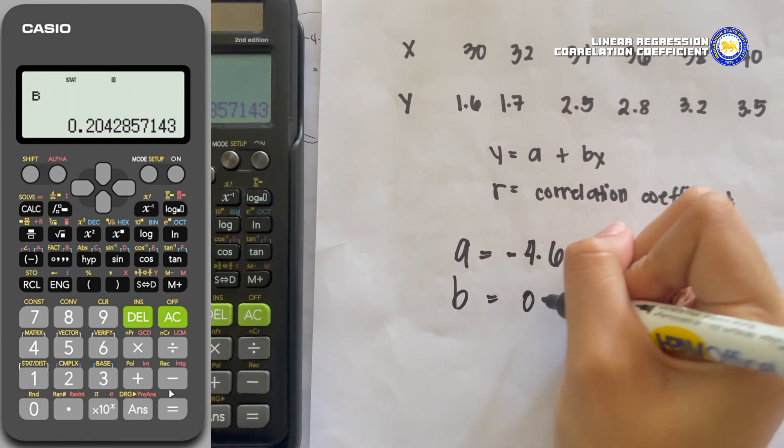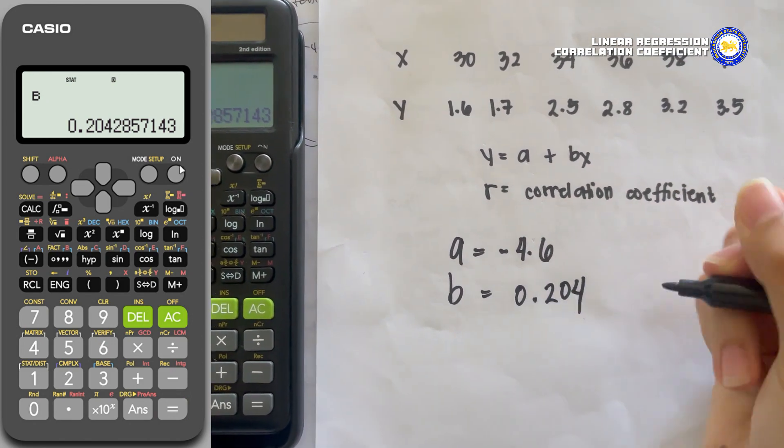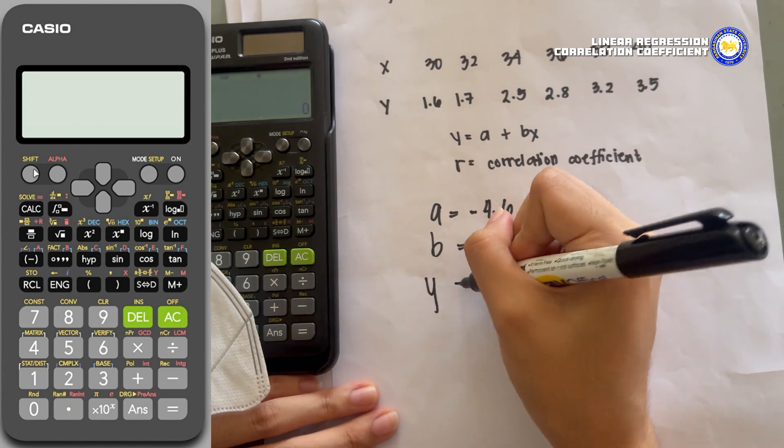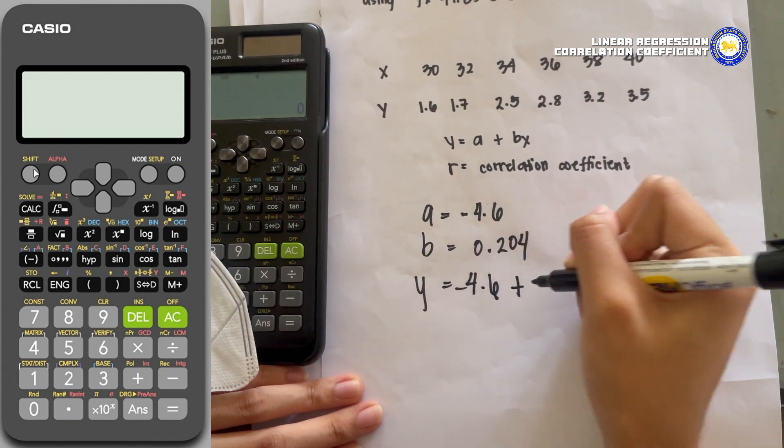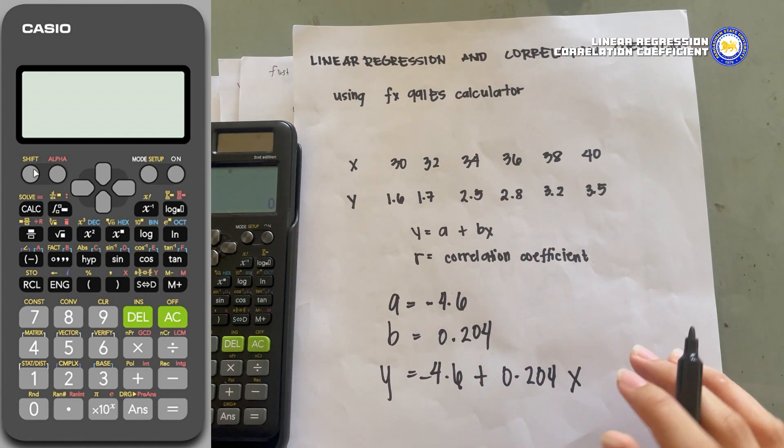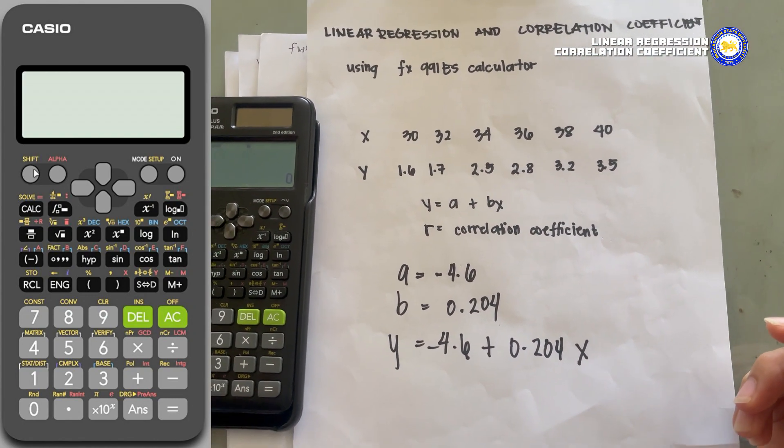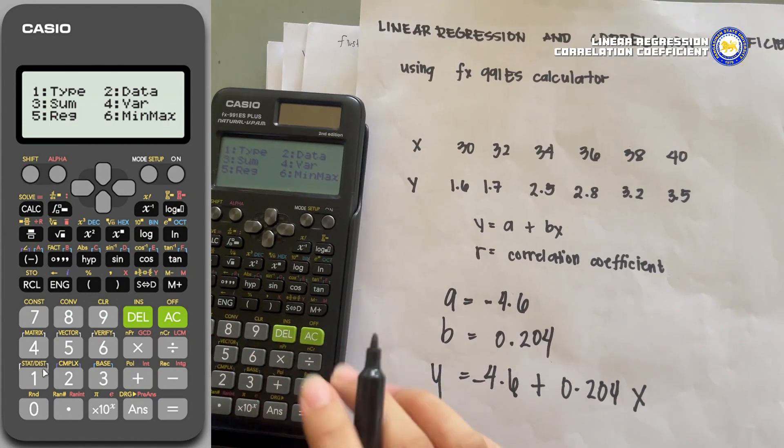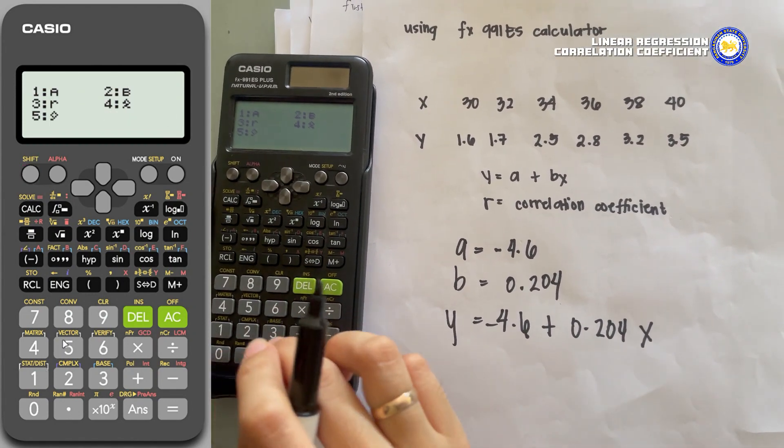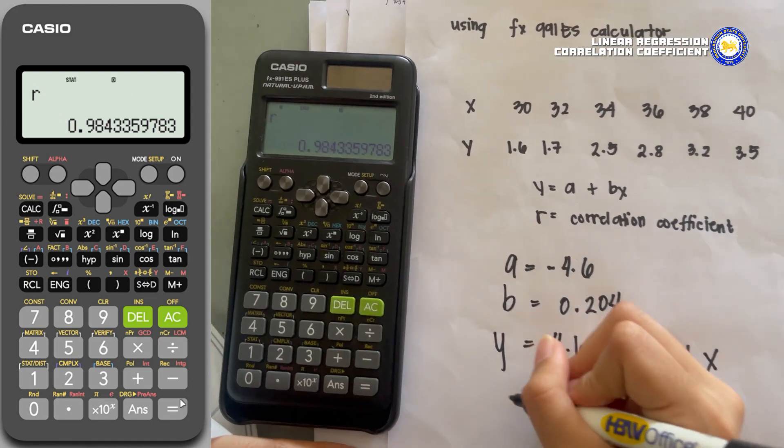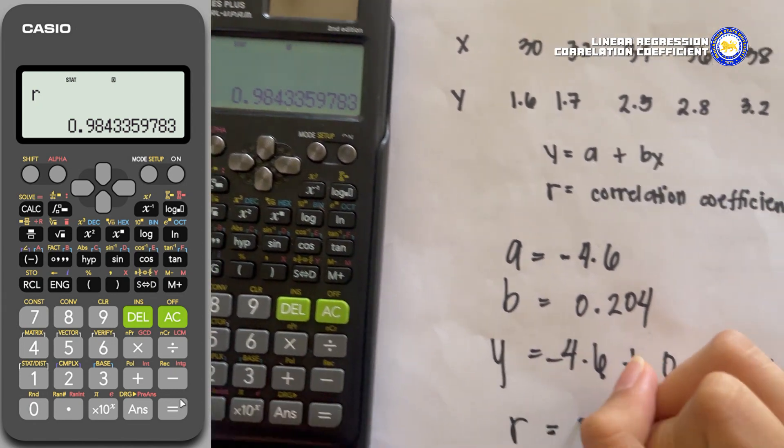So we have the regression equation of y equals negative 4.6 plus 0.204x. To find the correlation coefficient, repeat the process: Shift, Stat, and Reg, and press 3 which is r, and press equals. Our correlation coefficient is equal to 0.98.